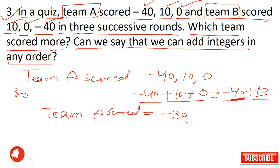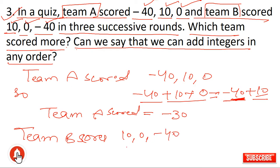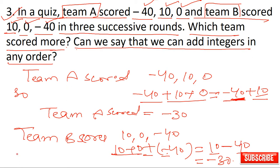Similarly for team B: 10, 0 and minus 40. We add them up: 10 plus 0 minus 40. 10 plus 0 equals 10, then 10 minus 40. This also equals minus 30.